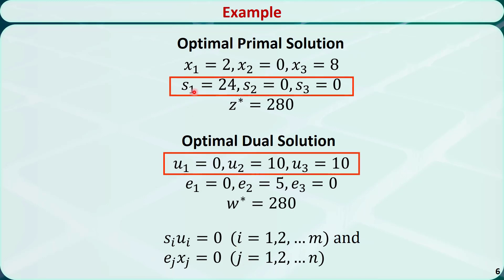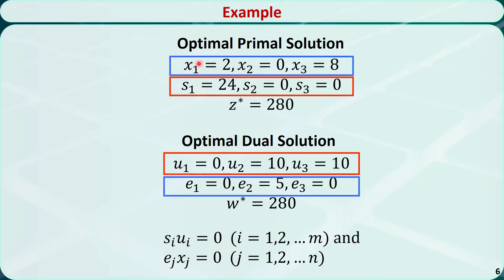S1 · u1 = 24 × 0 = 0. S2 · u2 = 0 × 10 = 0. S3 · u3 = 0 × 10 = 0. E1 · x1 = 0 × 2 = 0. E2 · x2 = 5 × 0 = 0. E3 · x3 = 0 × 8 = 0.